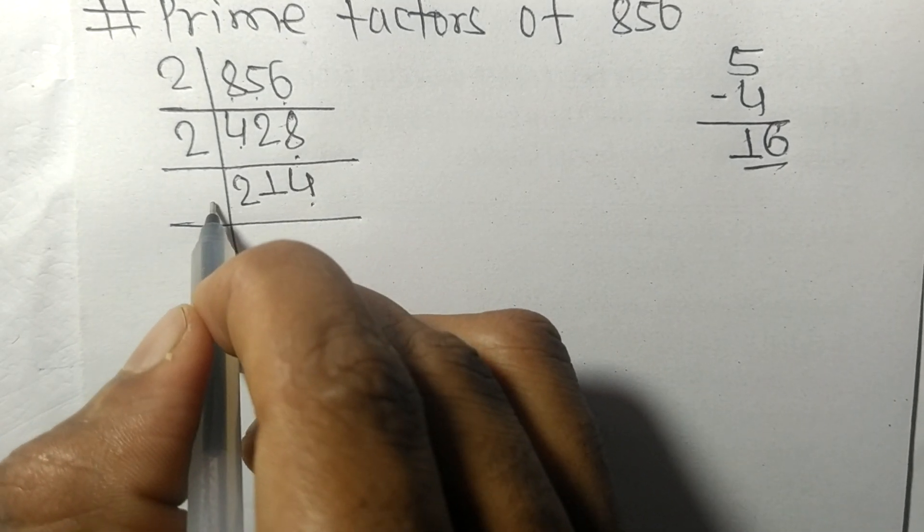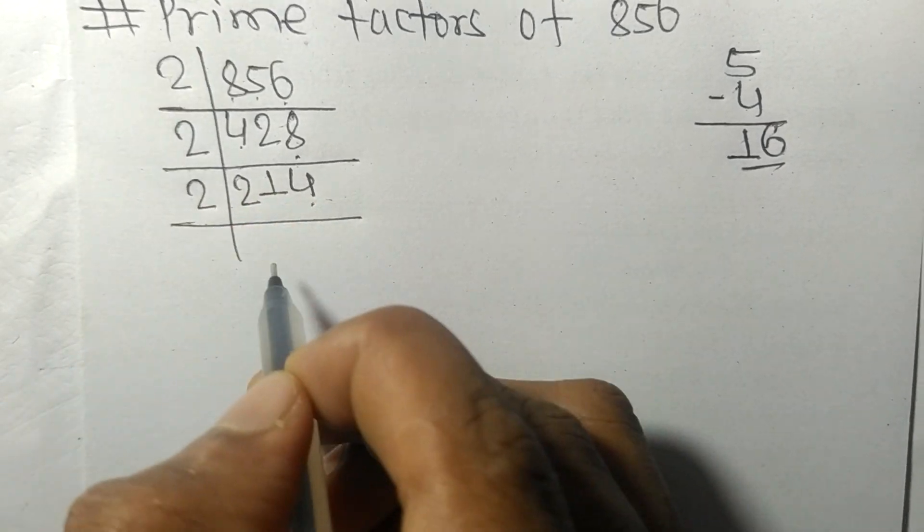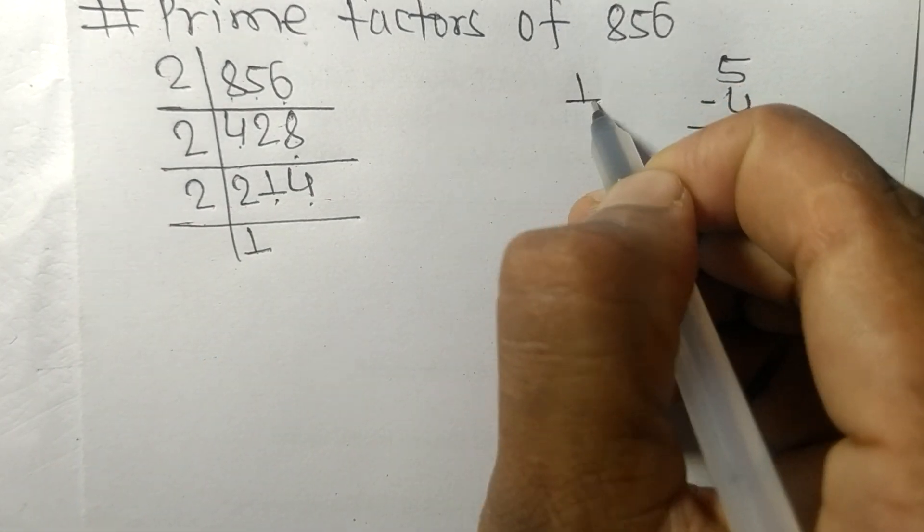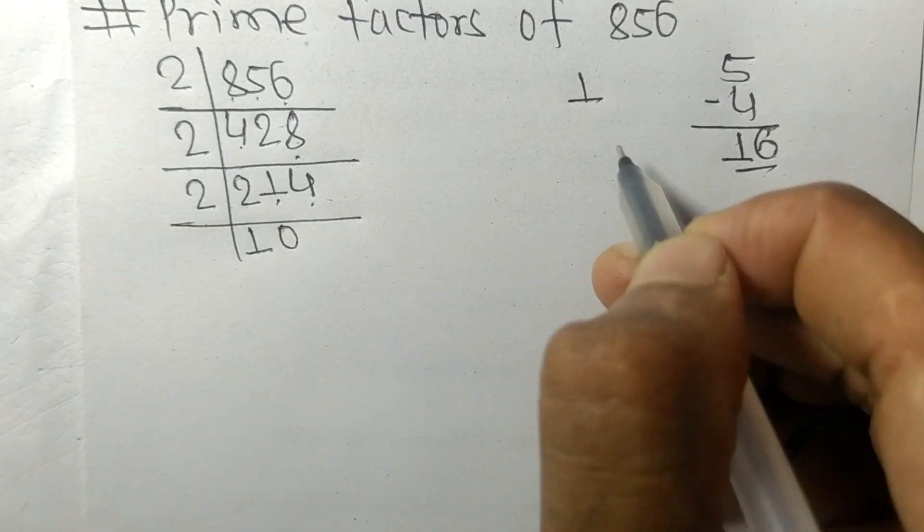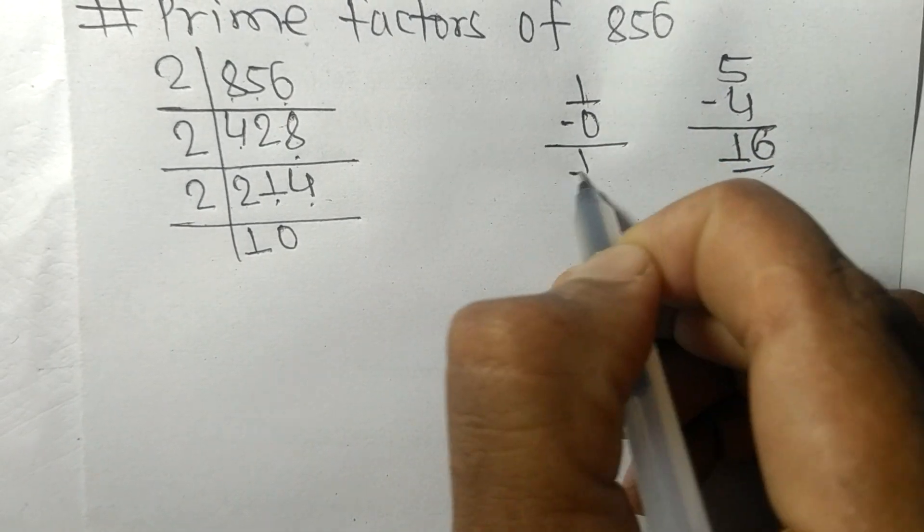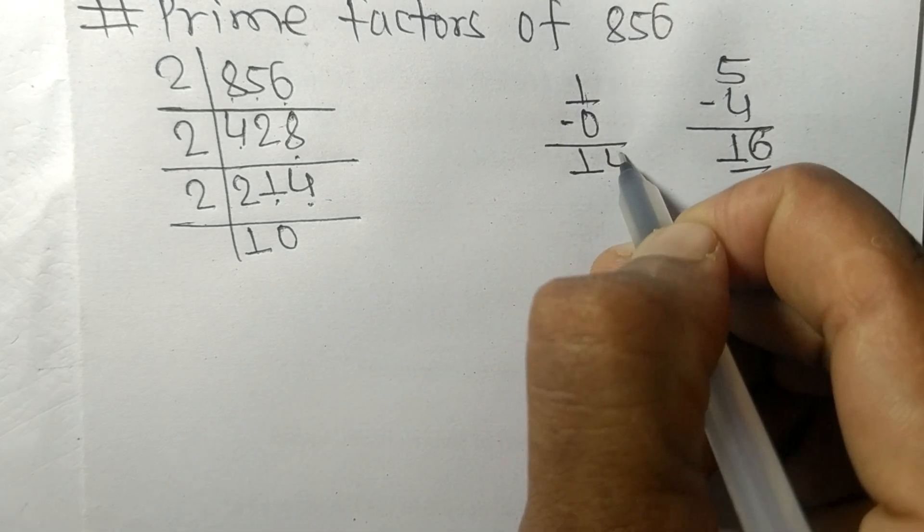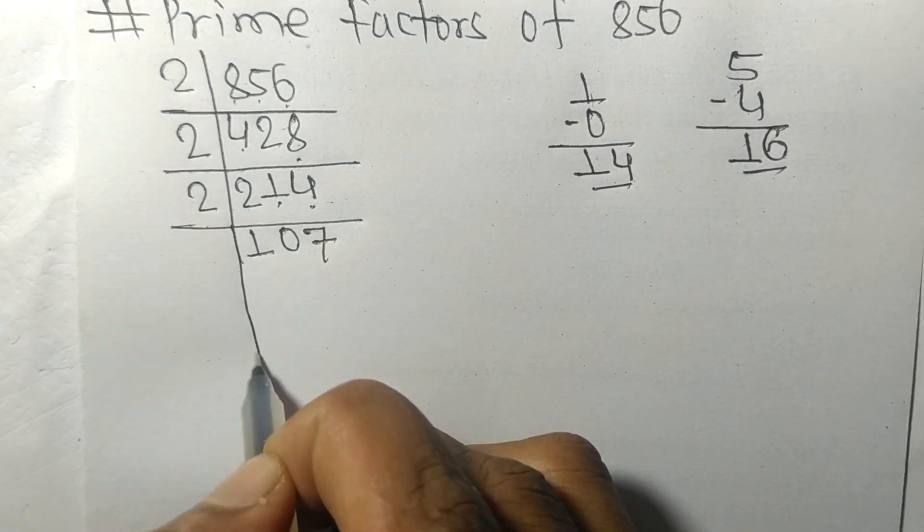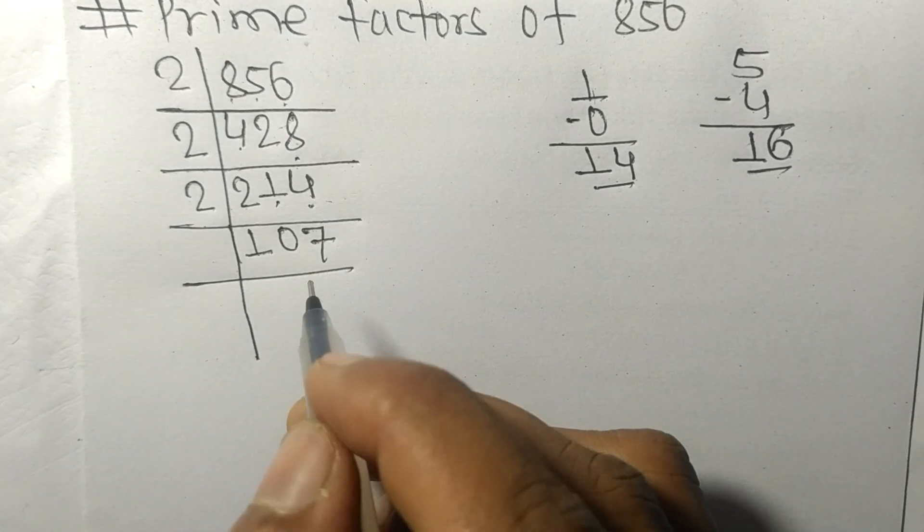So it is divisible by 2. 2 times 1 means 2. So now we have 1. 2 times 0 means 0. On subtracting we get 1 and this 4, 14. 2 times 7 means 14. So now we got 107.